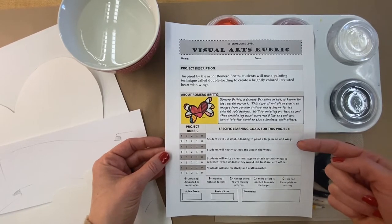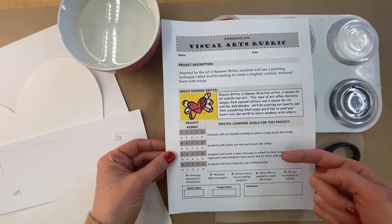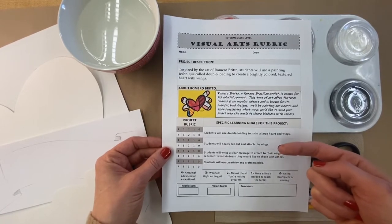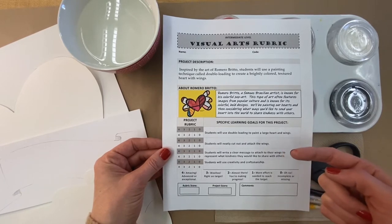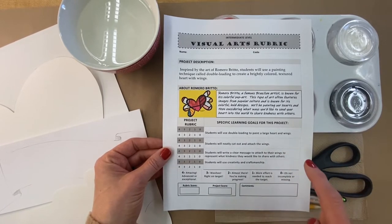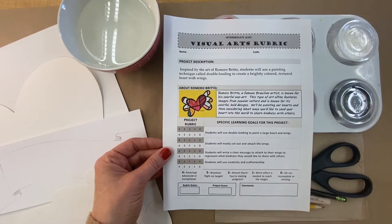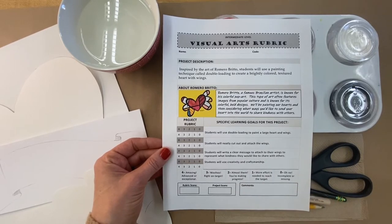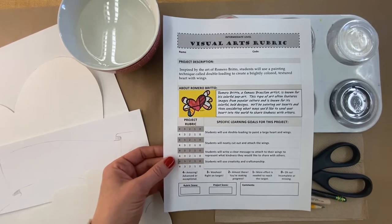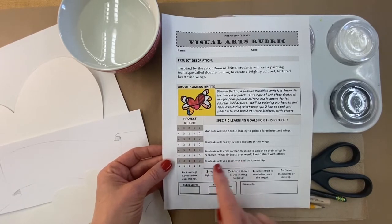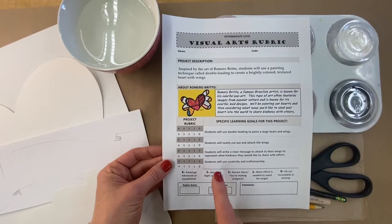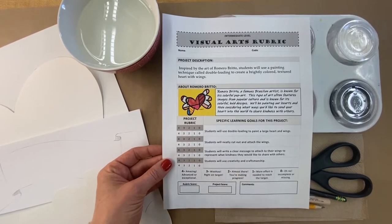The way that we will assess ourselves: students will use double loading to paint a large heart and wings. You're going to take a look at if you can cut out and attach those wings carefully, and then we'll be looking for a clear message to represent the kind of kindness that you would like to share with others. As always, we'll also focus on you giving your project creativity, your own sparkle, and a high quality finish called craftsmanship.